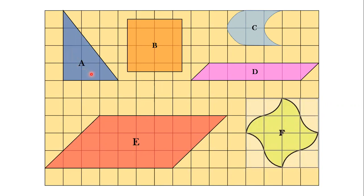Now see the first shape — the shape of a triangle. But we can consider it as a half part of a rectangle. Here it forms a rectangle. See this half of a rectangle. So only for shape A, I am using the formula: area of the rectangle is equal to length into breadth.